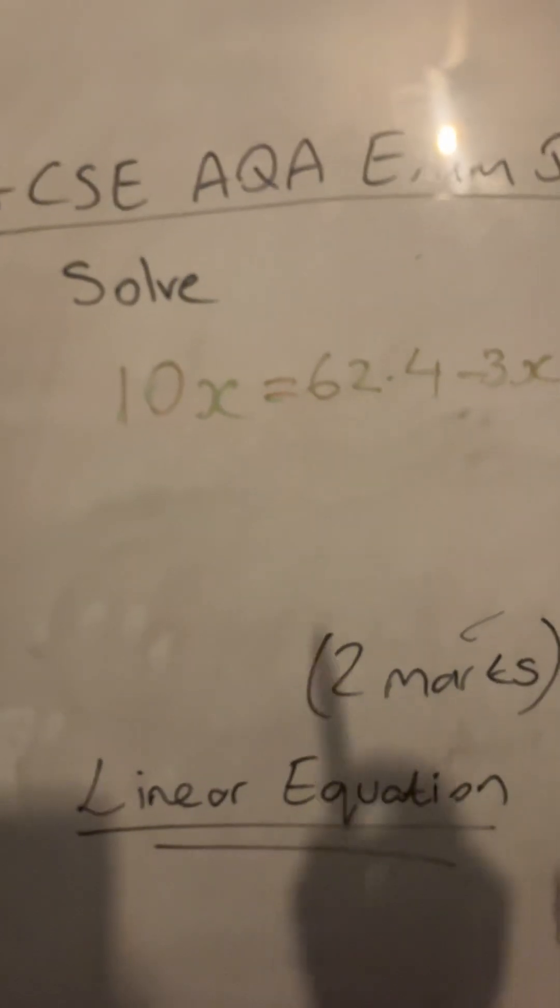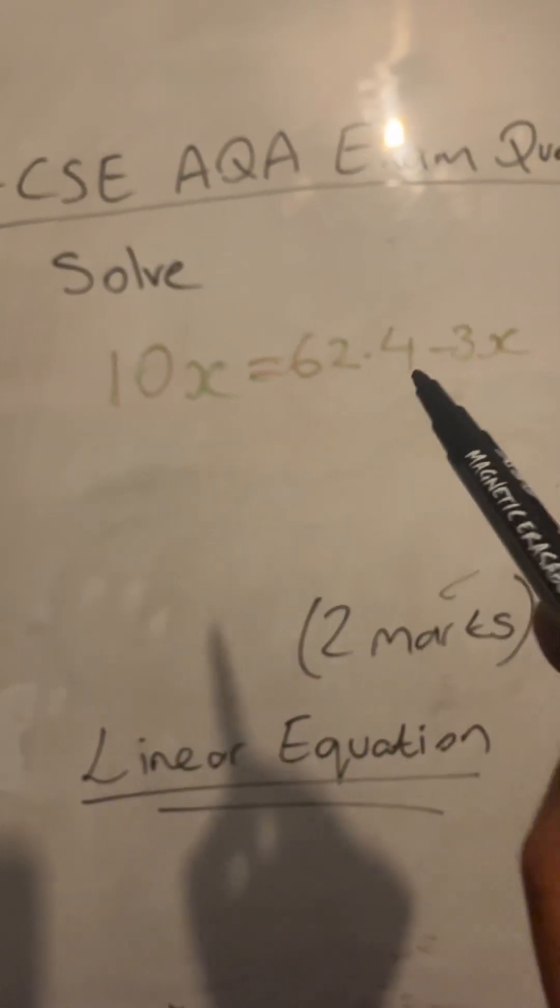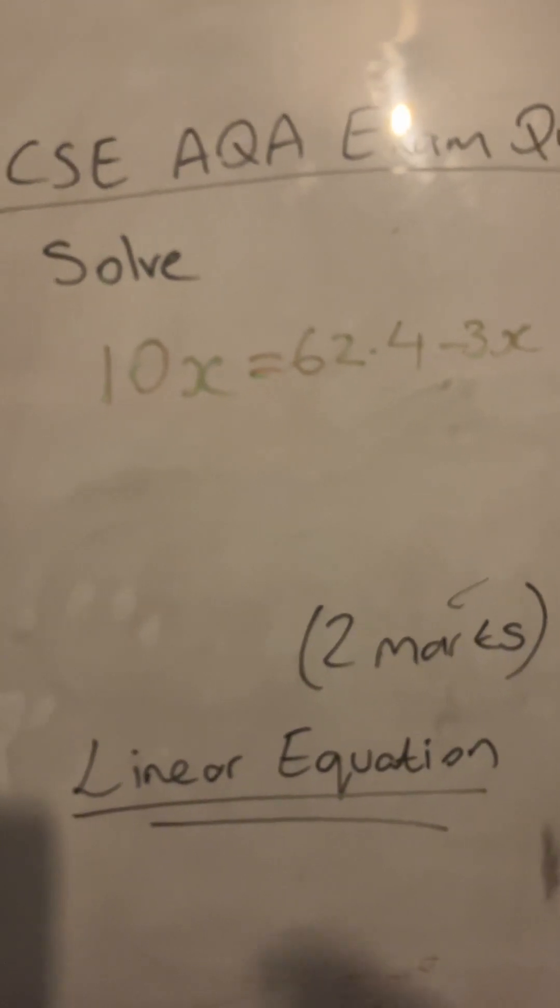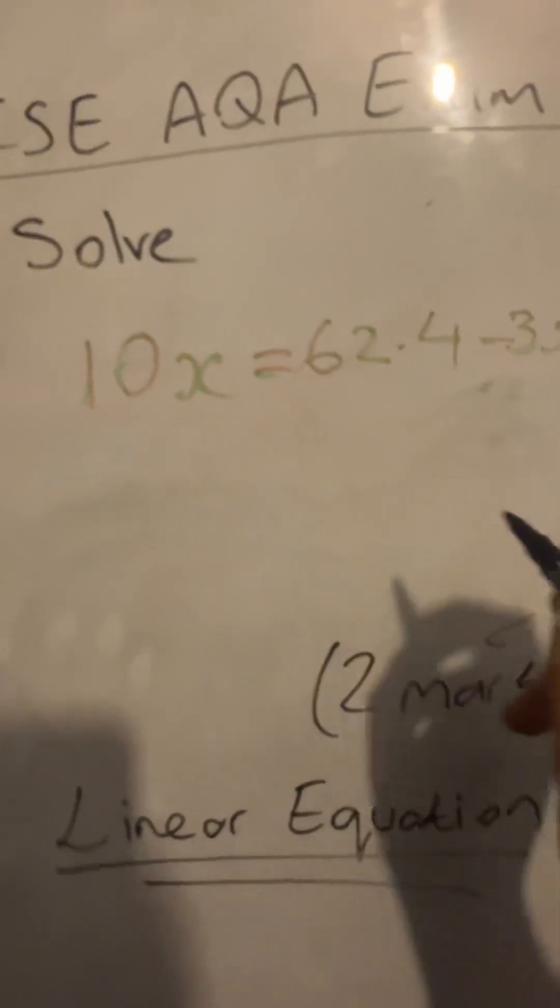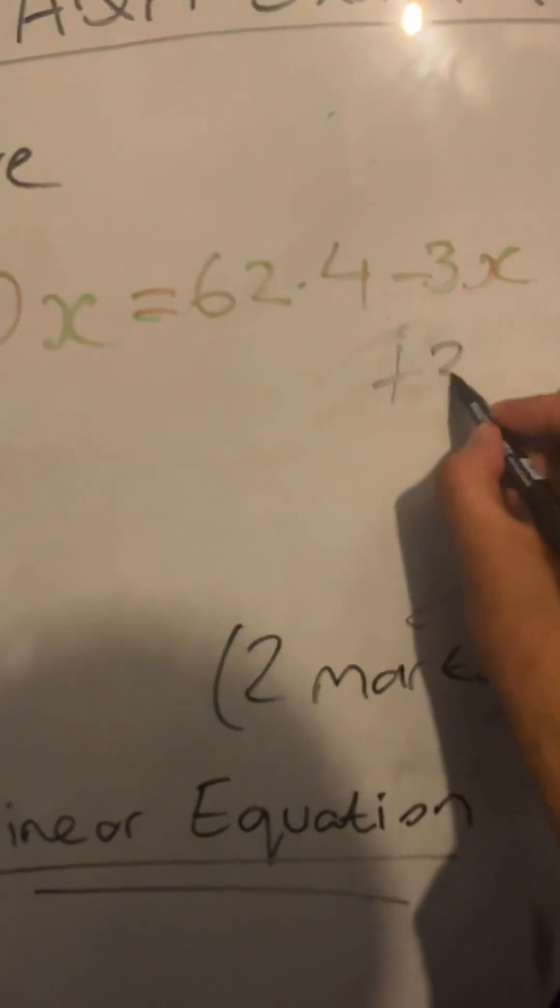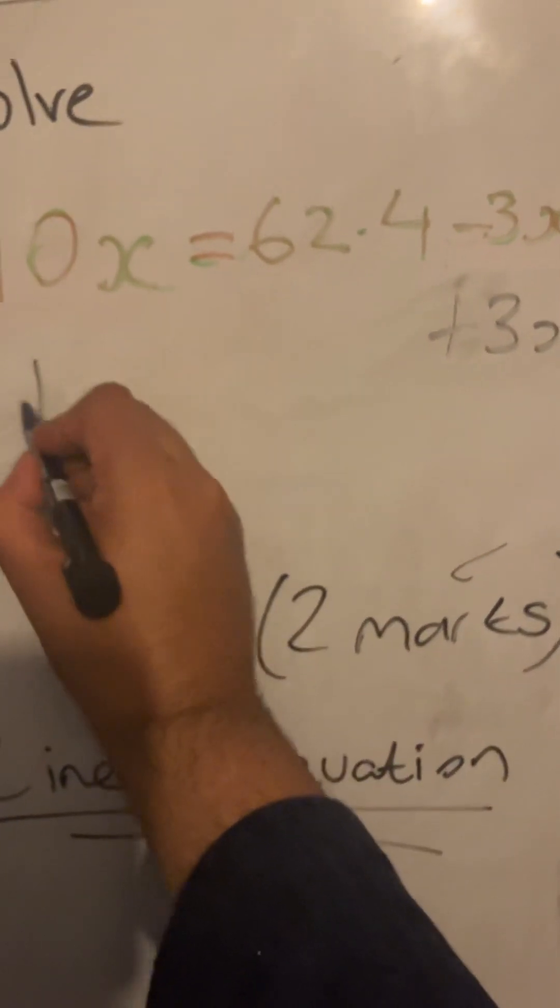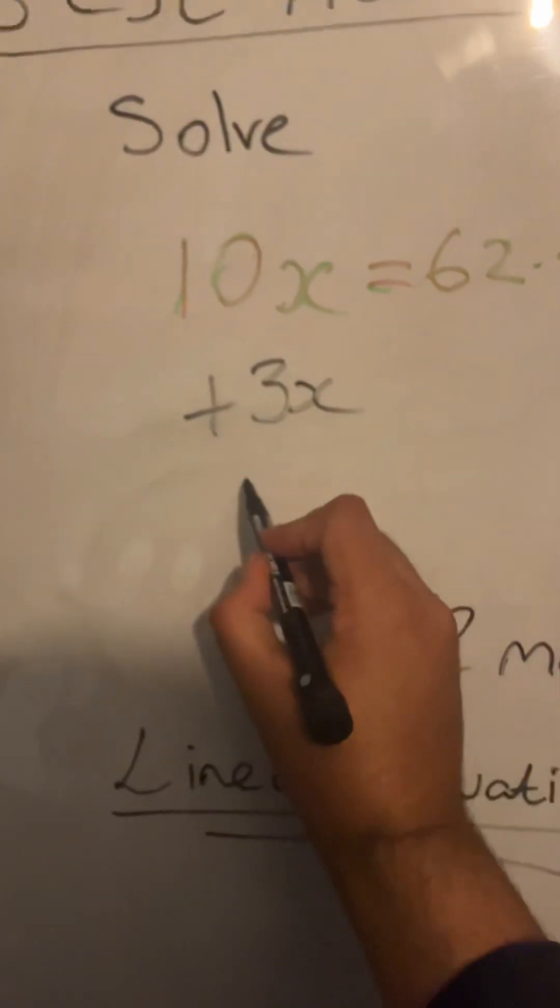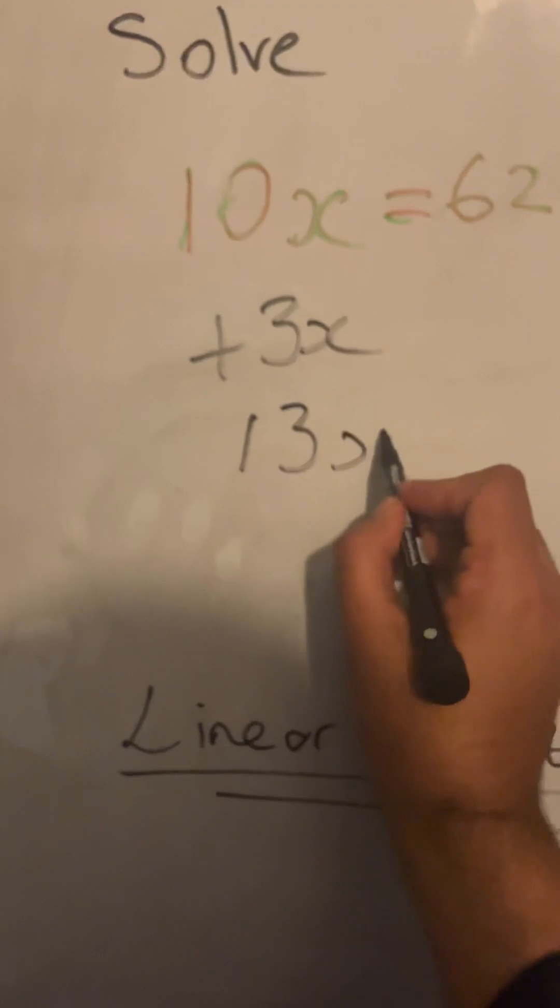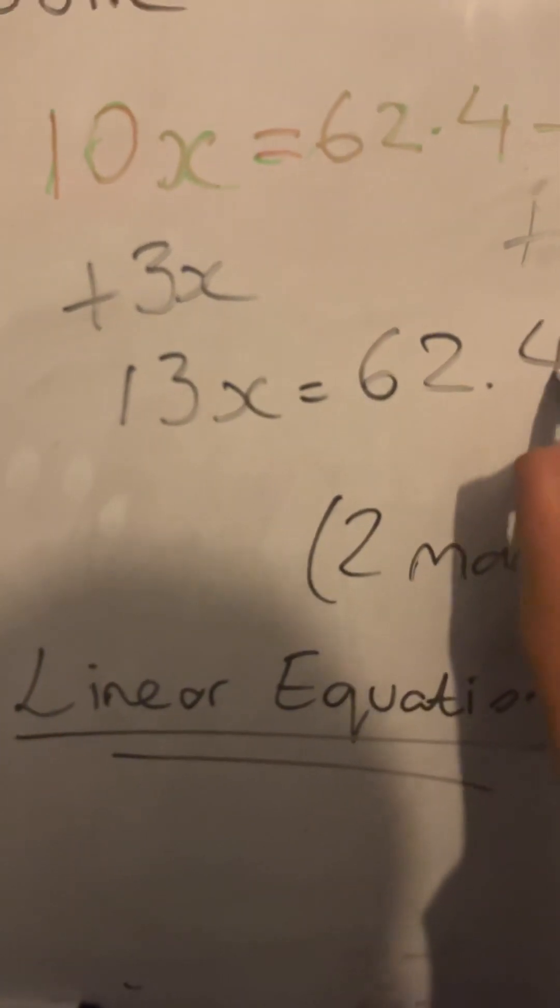So solve 10x equals 62.4 minus 3x. This is a calculator paper, so it is a calculator-based question. I'm going to add 3x to both sides to balance the equation respectively. 10x plus 3x goes to 13x, and then that's going to equal 62.4.